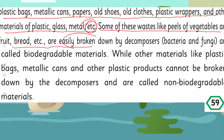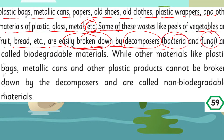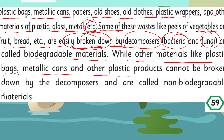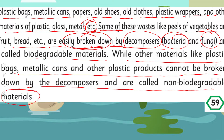Some of these wastes, like peels of vegetables, fruits, bread, and uncooked food, are easily broken down by decomposers — they are changed into small fragments. The decomposers are bacteria and fungi. These are called biodegradable materials. While other materials like plastic bags, metallic cans, and other plastic products cannot be broken down by decomposers and are called non-biodegradable materials — they remain as a whole.